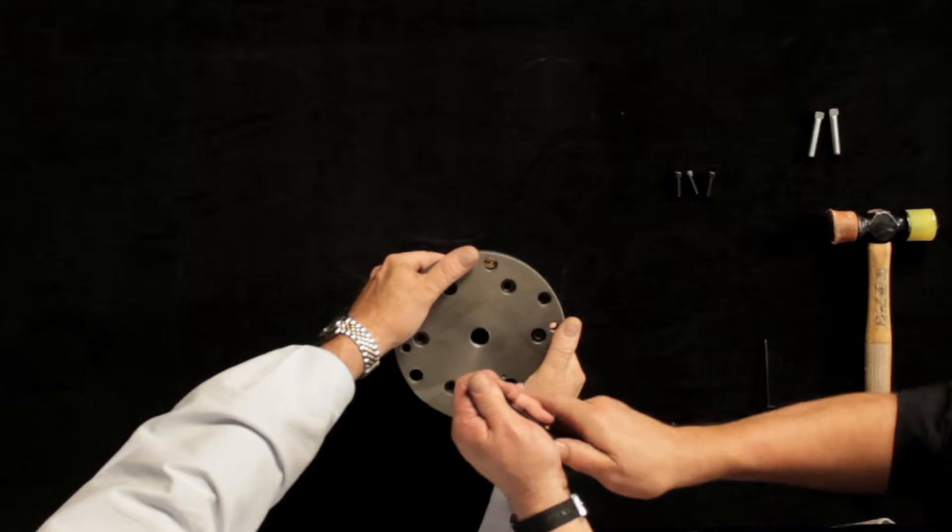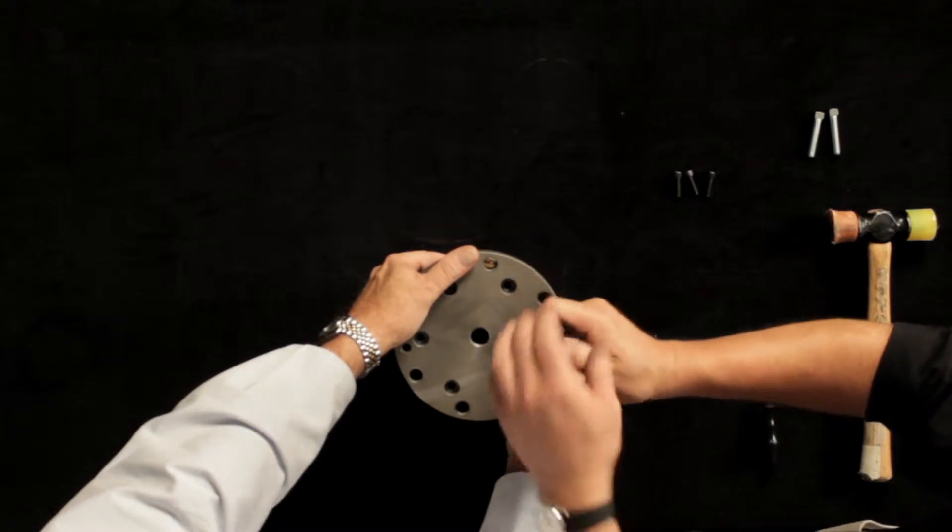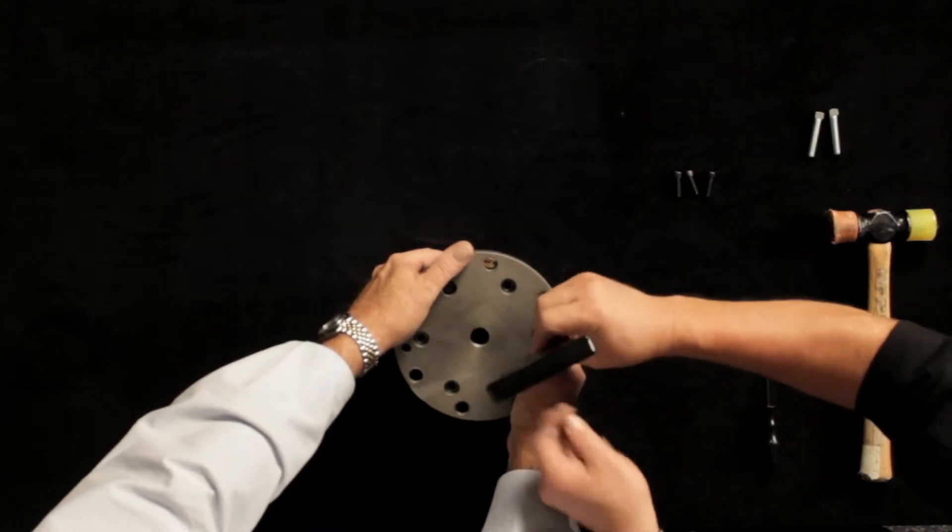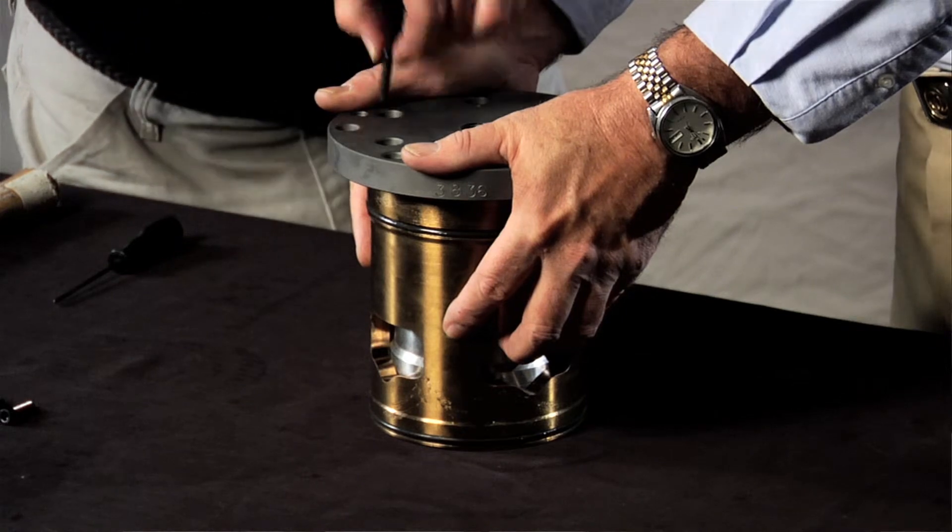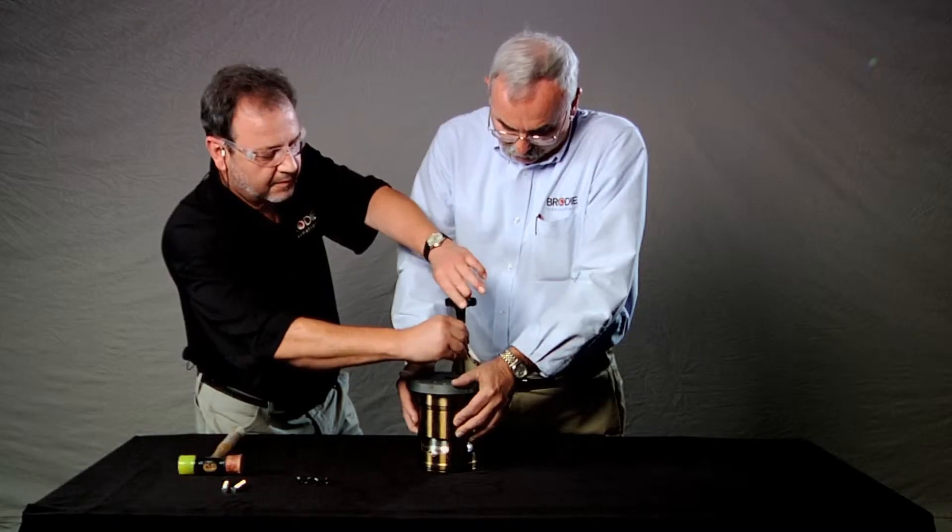Leave two opposing screws loose but in place until the other screws are removed, and then remove the final two screws. Again, be sure your assistant has a firm grip on the cylinder head.